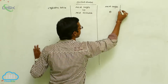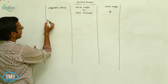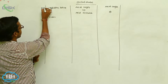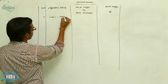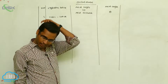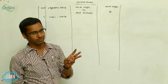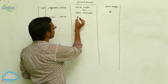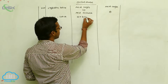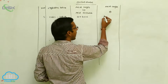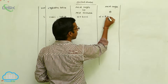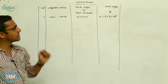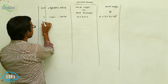The first one is cubic lattice. In a cubic lattice, we are concerned with three parameters: axial lengths a, b, c and axial angles alpha, beta, gamma. Here, a equals b equals c, meaning all distances are the same. The angles are also all equal: alpha equals beta equals gamma equals 90 degrees.